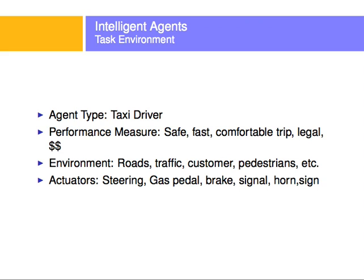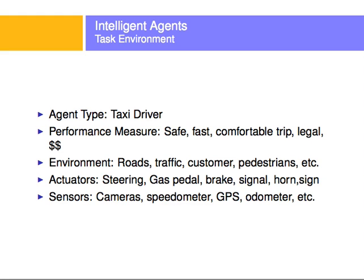Other actuators include the horn and hand signs. The sensors for an automatic taxi driver include cameras, a speedometer telling how fast it's going, a GPS telling its location, an odometer telling engine revolutions, and many other sensors that tell the taxi the environment configuration at any given point.